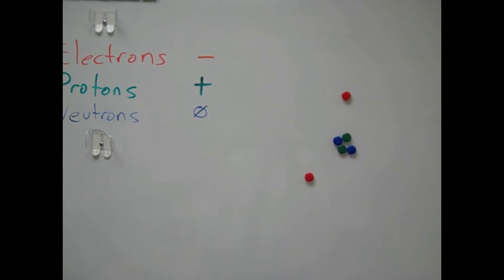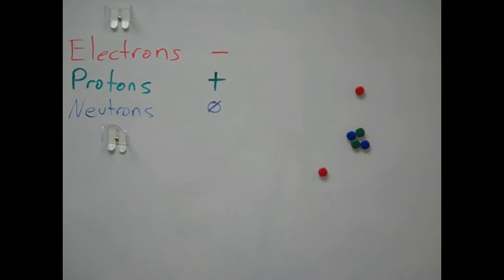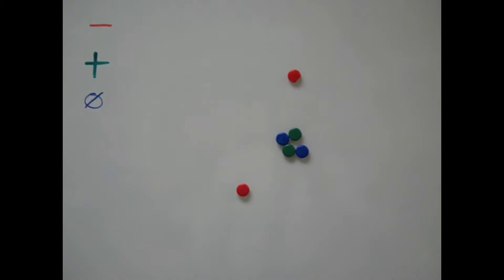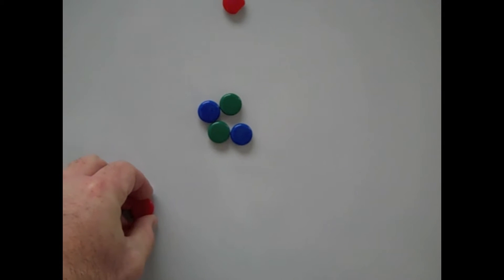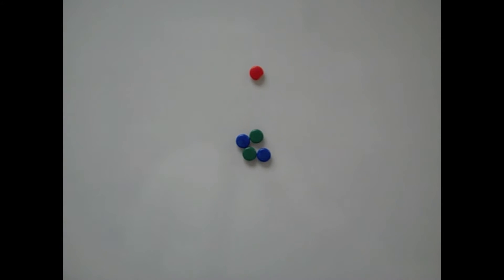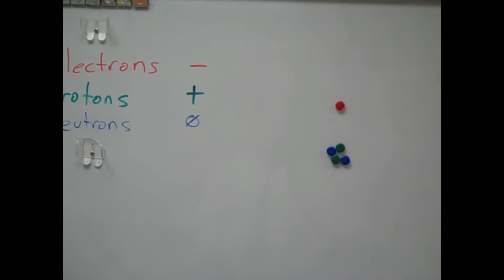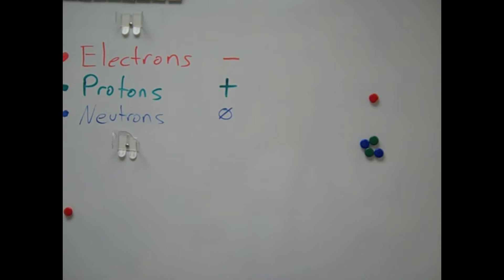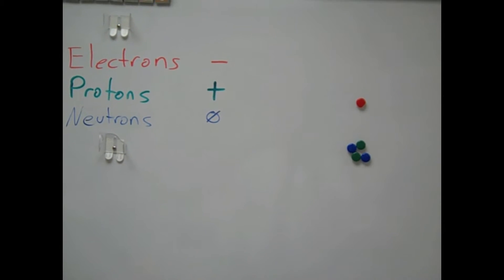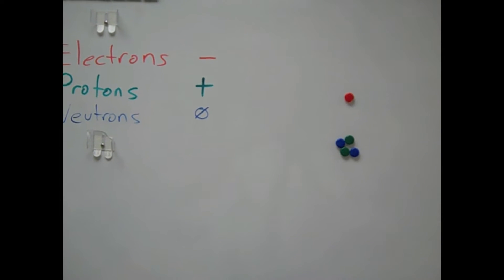Now the important thing to know about an atom is that one of its parts can move — the electrons. They can actually move from one atom to another. Let's say this electron jumps from one atom to another. Now we have two protons and one electron. Since the electrons are outnumbered, we're going to say that this atom is now positively charged. So if an atom loses an electron and there's an imbalance, that makes it positive.